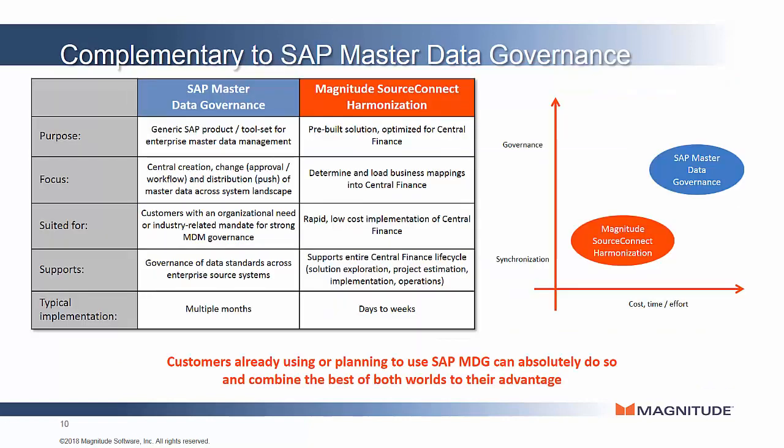You might be wondering how SourceConnect Harmonization relates to SAP Master Data Governance. Most Central Finance customers either have or are planning to adopt the full SAP MDG product, which provides full, active, or operational data governance across all systems — where master data can be authored and maintained centrally in MDG and pushed to other systems. However, it can be a lengthy implementation, and at the same time these companies are trying to shorten their Central Finance implementation. With a pre-built model and machine learning algorithms, SourceConnect Harmonization can greatly accelerate the initial load of master data for these complex domains, as well as synchronize changes from source systems into Central Finance until full MDG can be implemented.